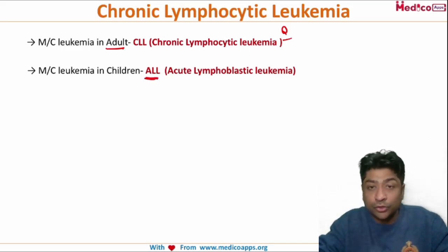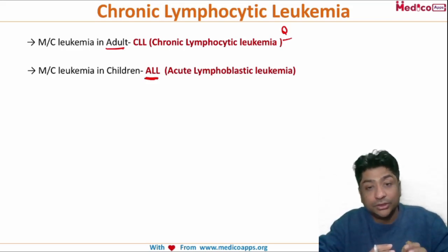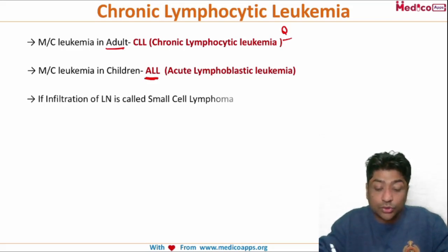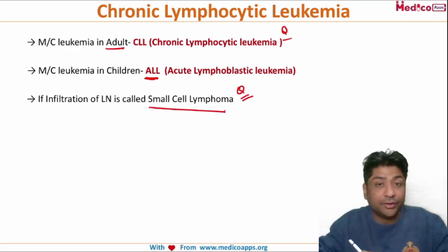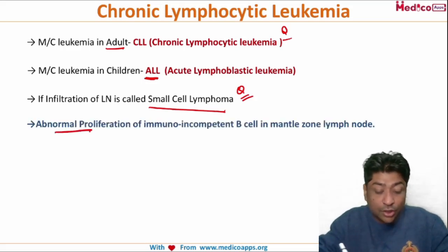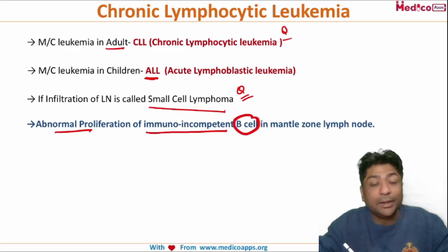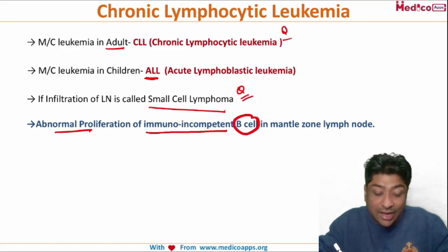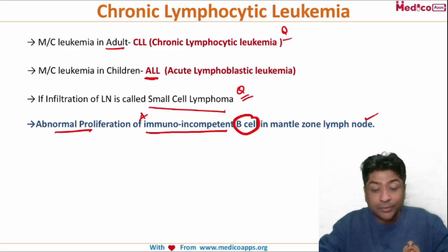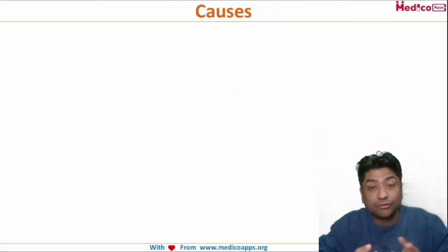Another very important point about CLL is that it involves abnormal proliferation of B cells. All these B cells infiltrate the lymph node and spleen. Because of this infiltration of lymph node or spleen, CLL is also called small cell lymphoma — again a very favorite exam question. The major pathology is abnormal proliferation of immuno-incompetent B cells, primarily in the mantle zone of the lymph node.